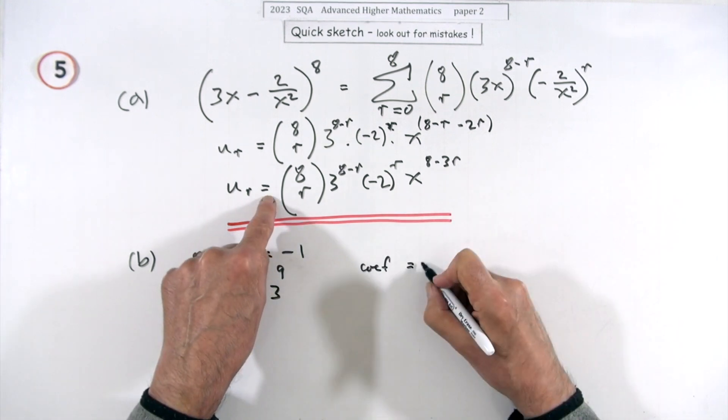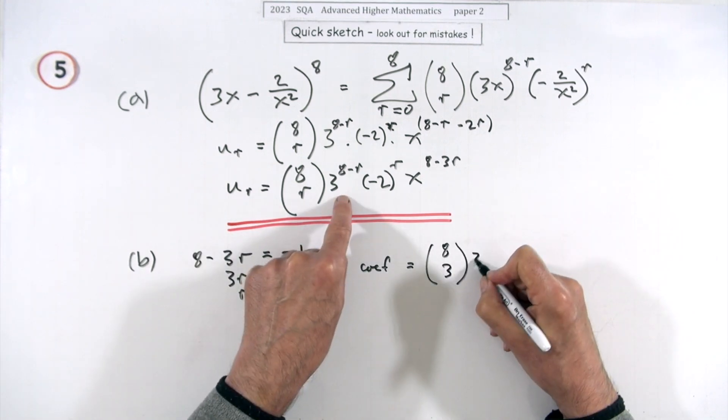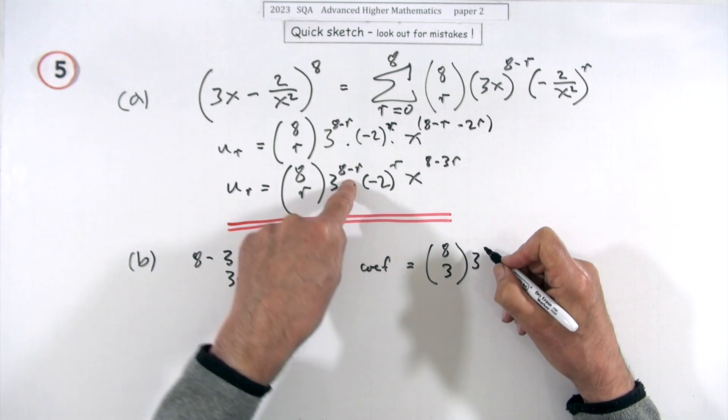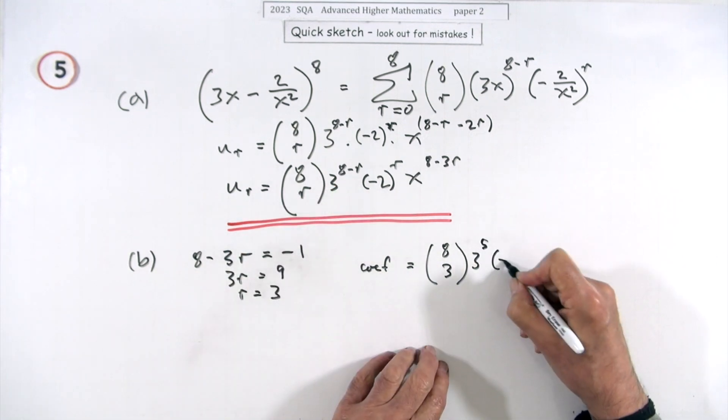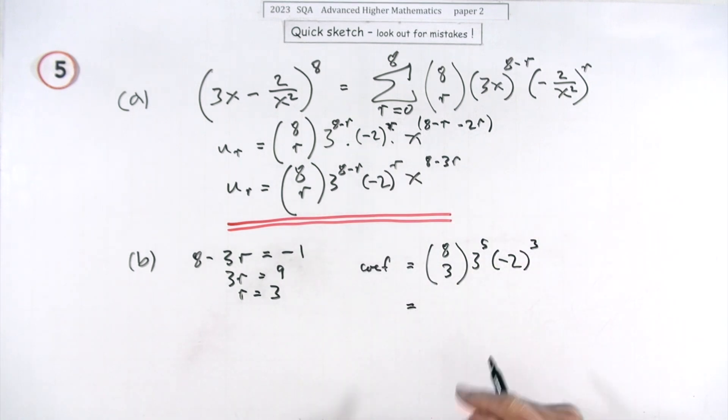It'll be eight choose three, it'll be three to the power, I'll just put it straight in, so it'll be eight minus three that's five, and it'll be negative two to the power three. Now luckily it's paper two so you can just press all that into your calculator.